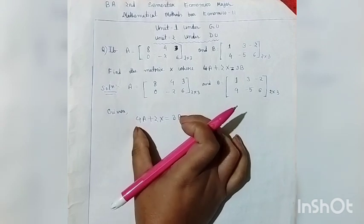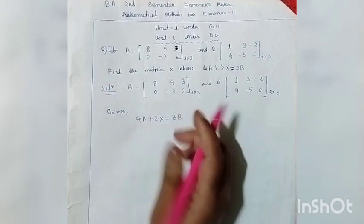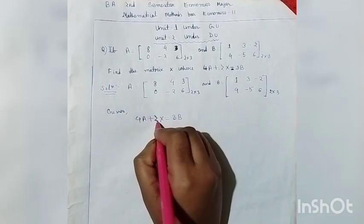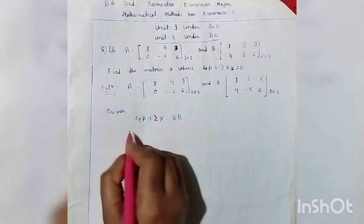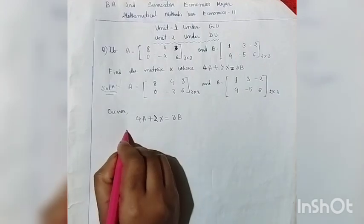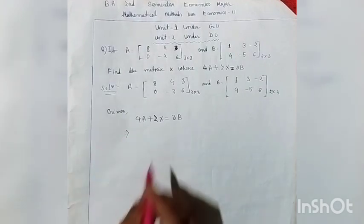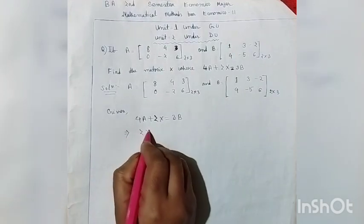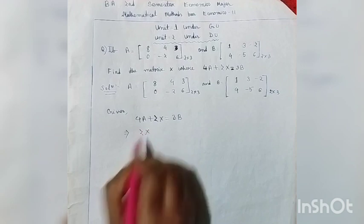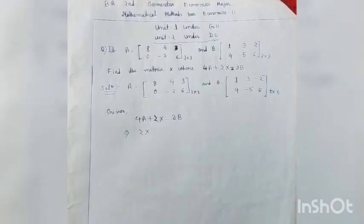From this equation we solve for matrix X. Rearranging: twice X equals twice B minus 4A, so X equals (3/2)B minus 2A. We isolate the X matrix on the left-hand side by moving 4A to the right-hand side, changing its sign.